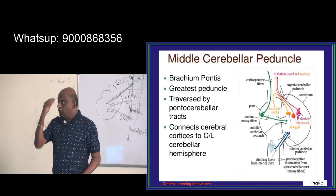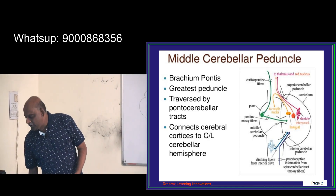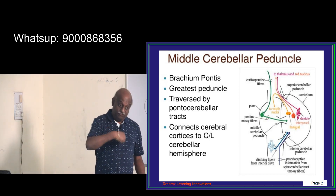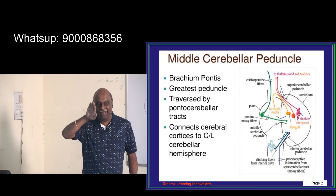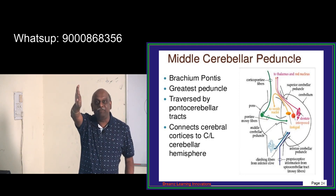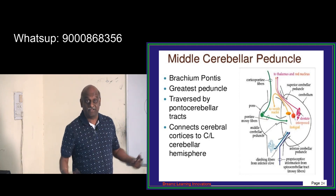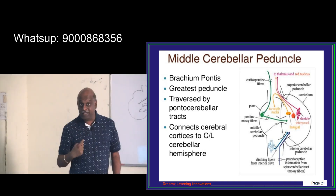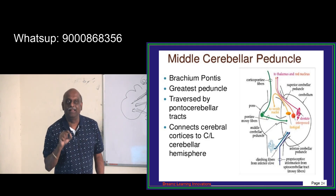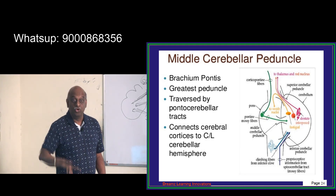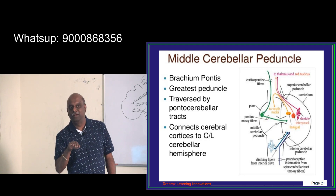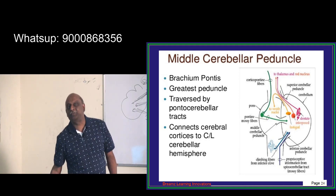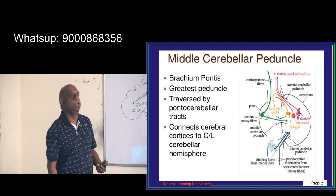That is the story of the rubrospinal tract. From where does it receive afferents? From the cerebellum through the superior cerebellar peduncle, there is an afferent going to the red nucleus. Second, the descending fibers from the cerebral cortex also come to the red nucleus. Together, from the red nucleus, fibers travel to the anterior horn cells — that pathway is called the rubrospinal tract.